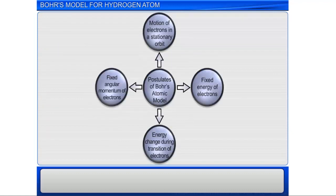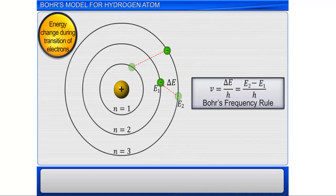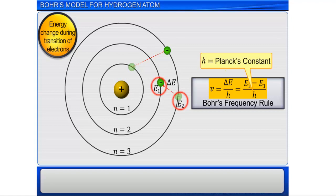The third postulate states that the frequency of the radiation emitted or absorbed can be represented by the equation, nu is equal to delta E divided by H, that is E2 minus E1 divided by H, where E1 and E2 are the energies of the lower and higher stationary states and H is the Planck's constant.